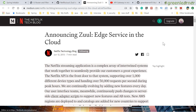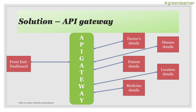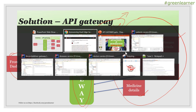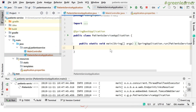We are going to talk about Zuul in detail in the next video. Let me show you this diagram I already explained — this is the API gateway, and this is the front-end dashboard. These are different services for an online doctor portal: patient details, location details, and medicine details. We are going to create these services individually as REST services and configure this API gateway. Zuul is going to work as the API gateway in this case.